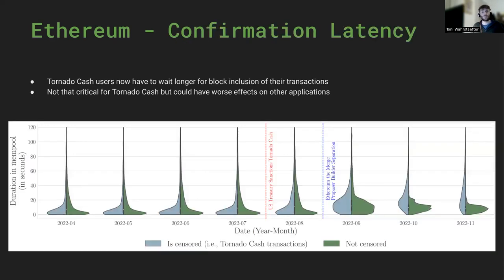Finally, we also analyze confirmation latency, especially focusing on Tornado Cash users, and could already see that Tornado Cash users had to wait longer for their transactions to be included.